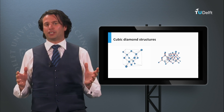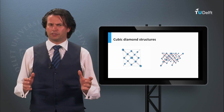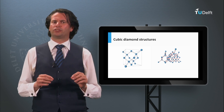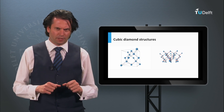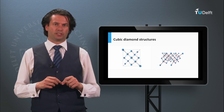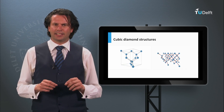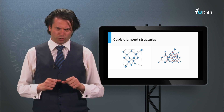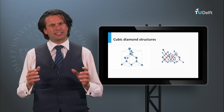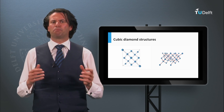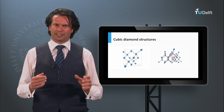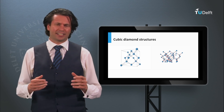The lattice structure of semiconductor materials is crystalline. Let's look at some properties of the crystalline lattice. In week 2 we already introduced its lattice properties. Crystalline silicon has a cubic diamond structure. A crystalline lattice means that atoms are arranged in a certain pattern which repeats itself, and it has long range order and symmetry.